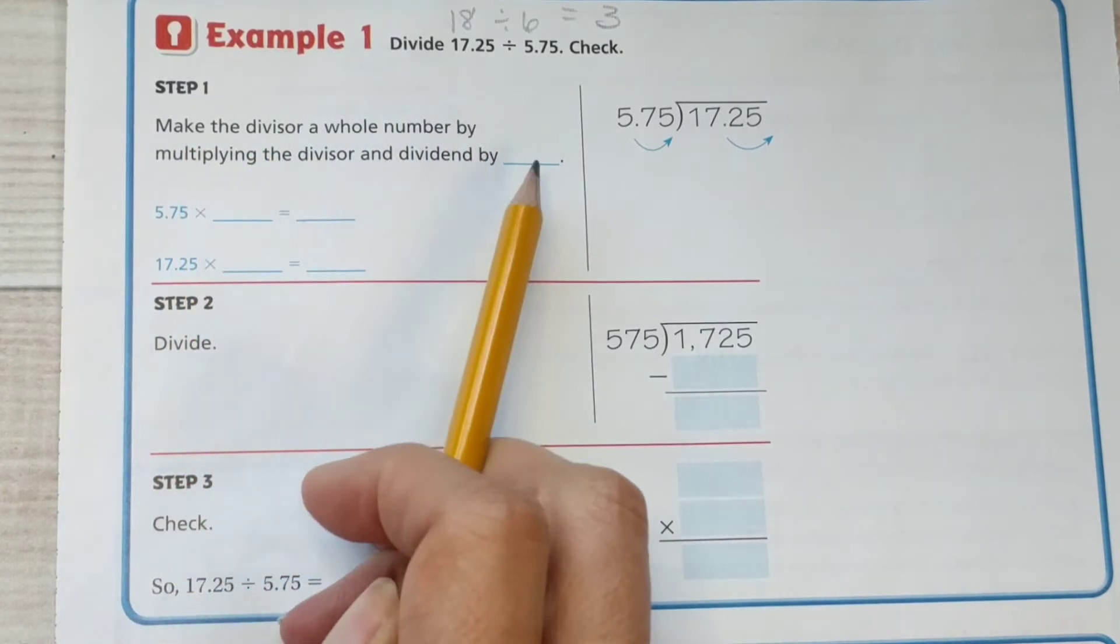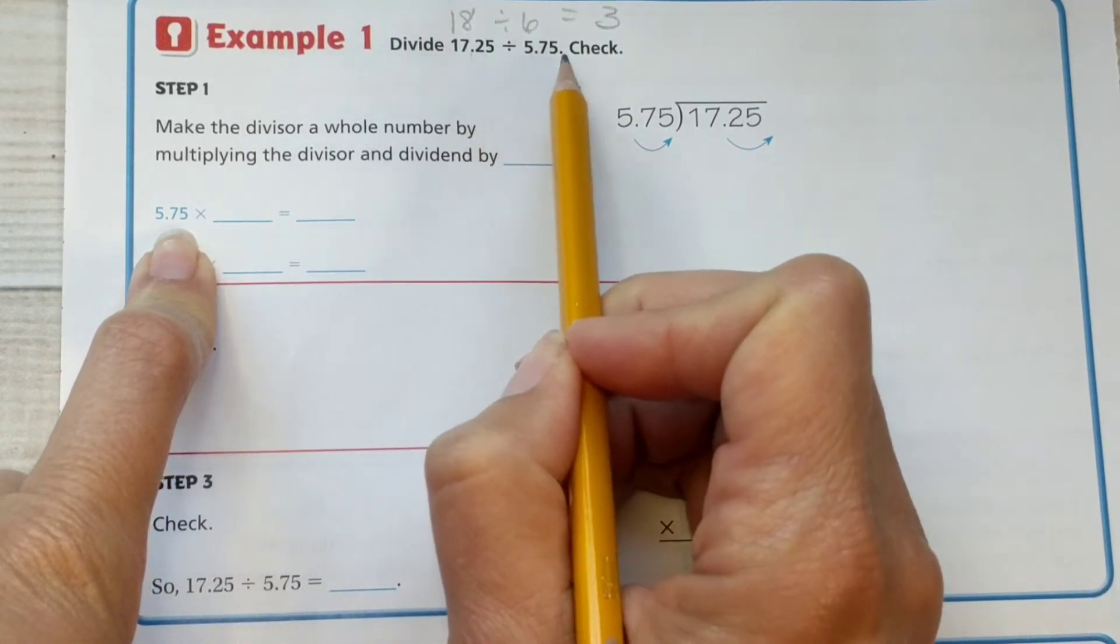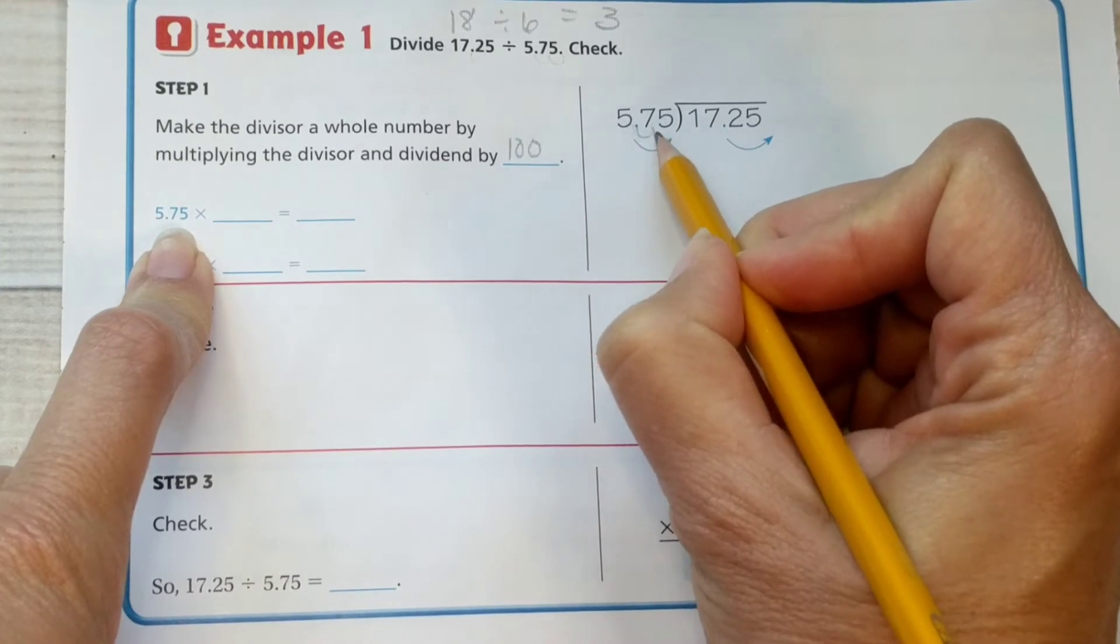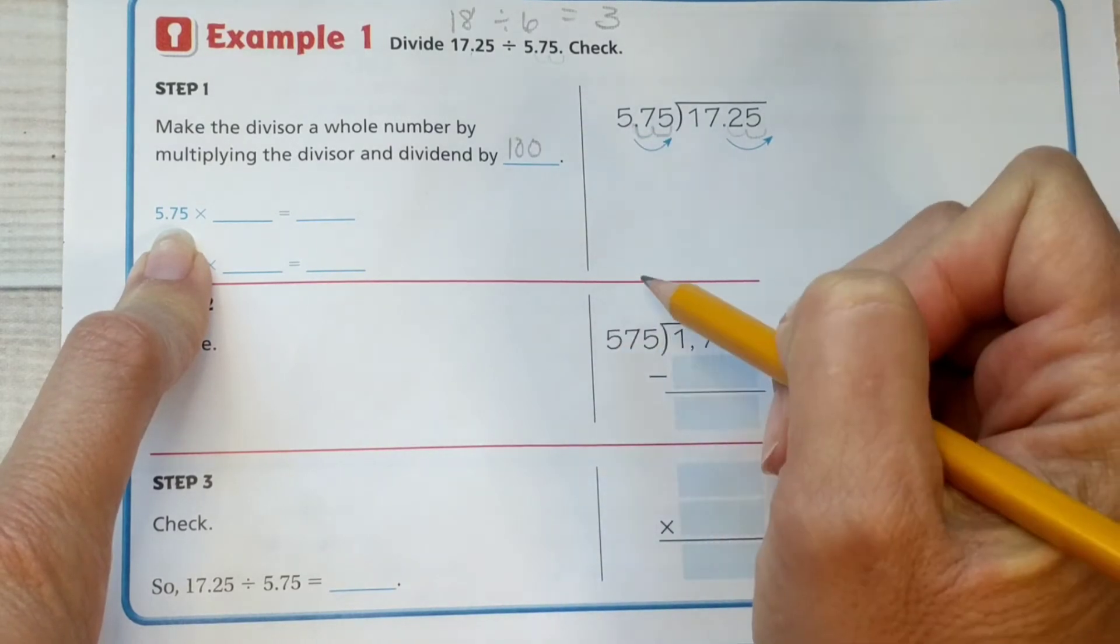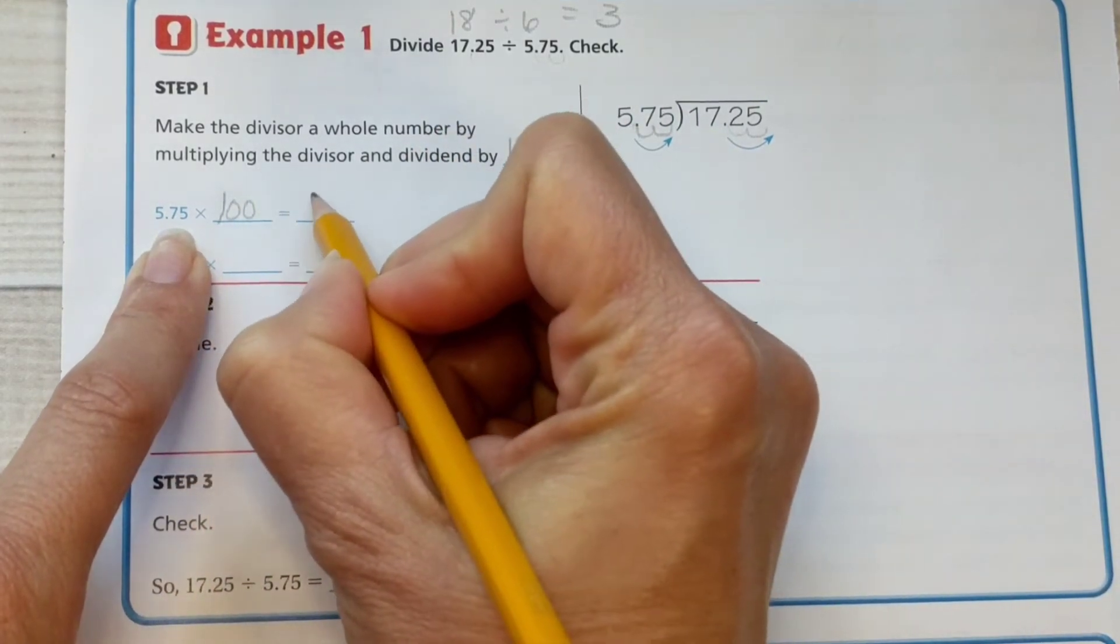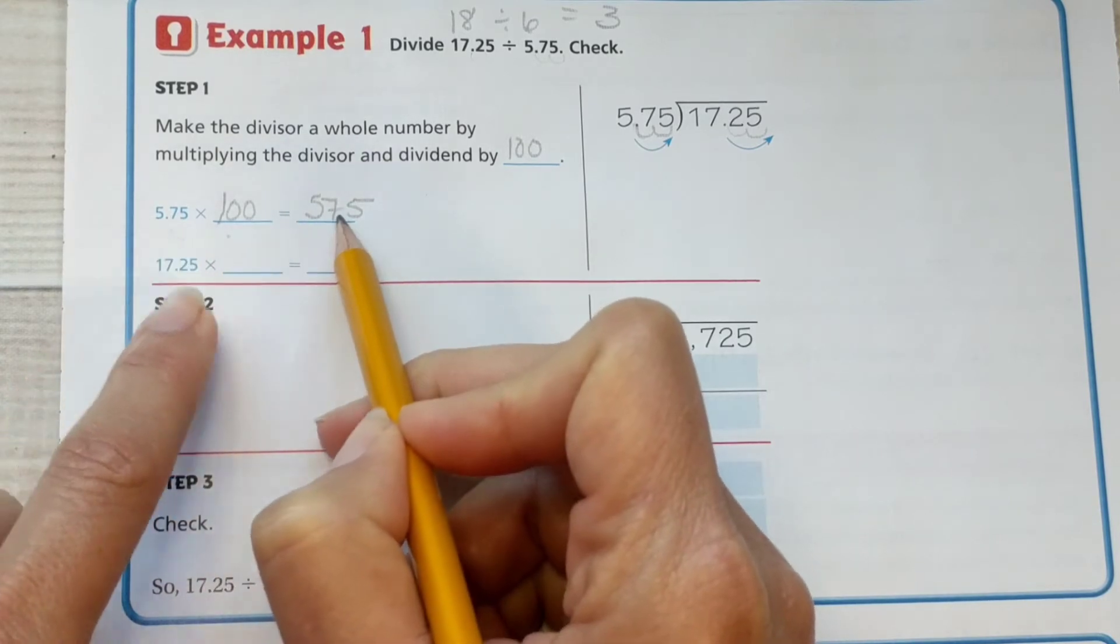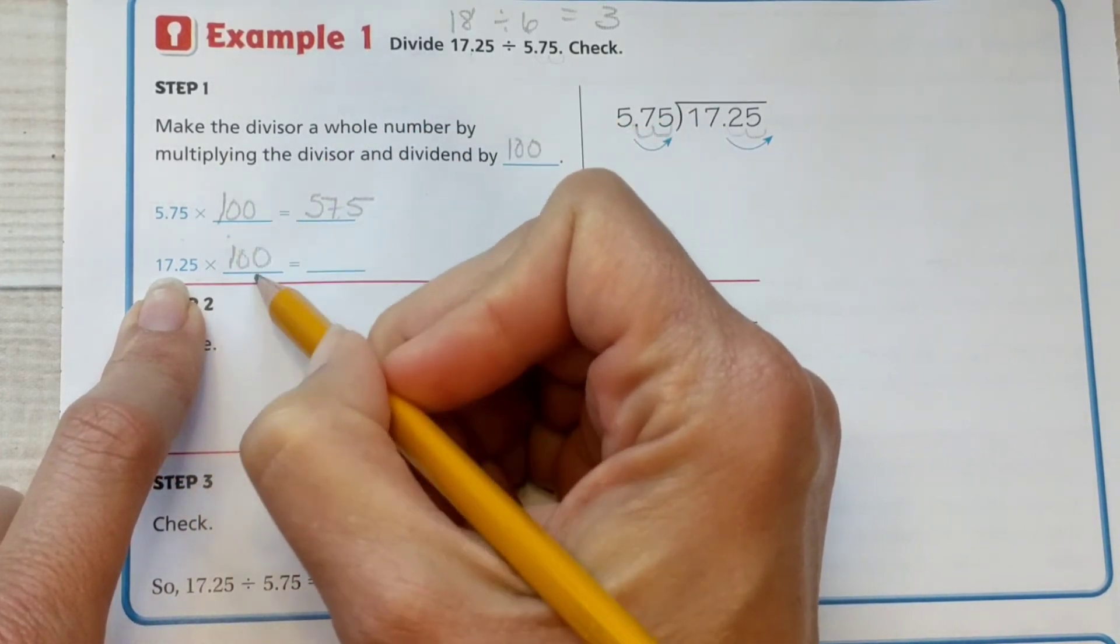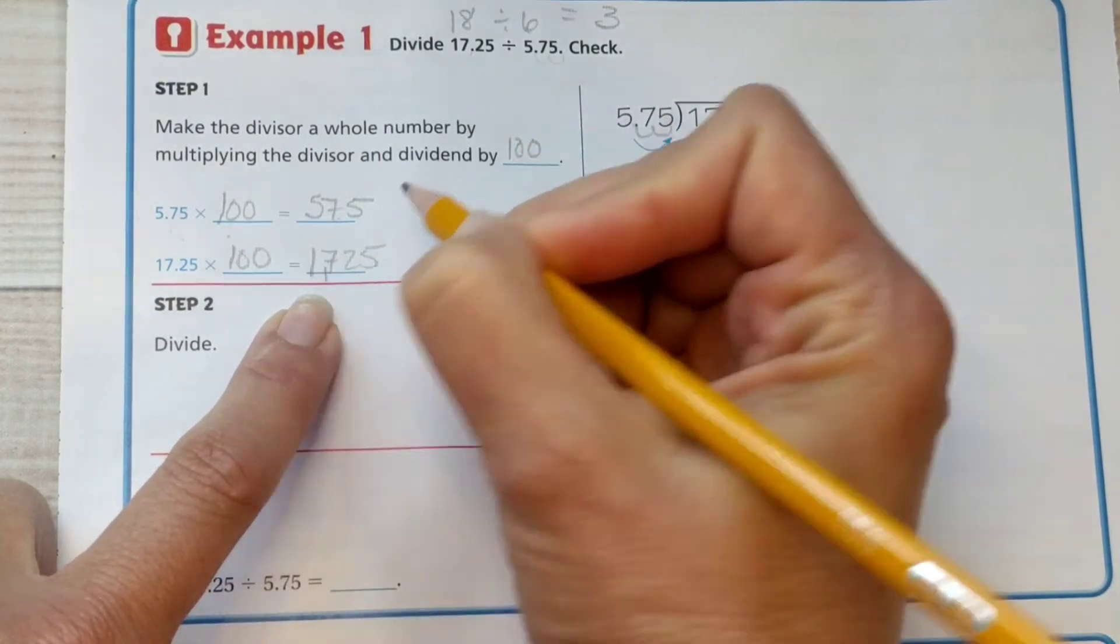Make the divisor a whole number by multiplying the divisor and the dividend by, now this time we're going to multiply by 100 because we need to move the decimal twice. We're going to multiply by 100 because this needs to come over 1, 2 times. If we multiplied by 10, it would only come over once, and that's not enough to get rid of the decimal in the divisor. So 5 and 75 hundredths times 100 is 575, and 17 and 25 hundredths times 100 is 1,725.